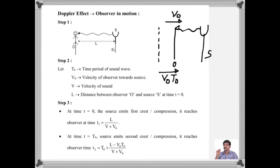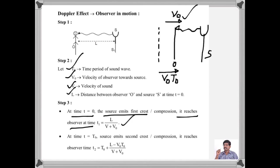Let us discuss the Doppler effect when the observer is moving towards the source with a velocity V₀. Let T₀ be the time period of the sound wave, V₀ be the velocity of the observer toward the source, V be the velocity of sound, and L be the distance between the observer and the source at T = 0. At T = 0, the source emits the first crest or compression, and it reaches the observer at time L/(V + V₀). At time T₀ — after one time period — the source emits the second wave or crest, which reaches the observer at time T₂ = T₀ + (V − V₀)·T₀/(V + V₀).